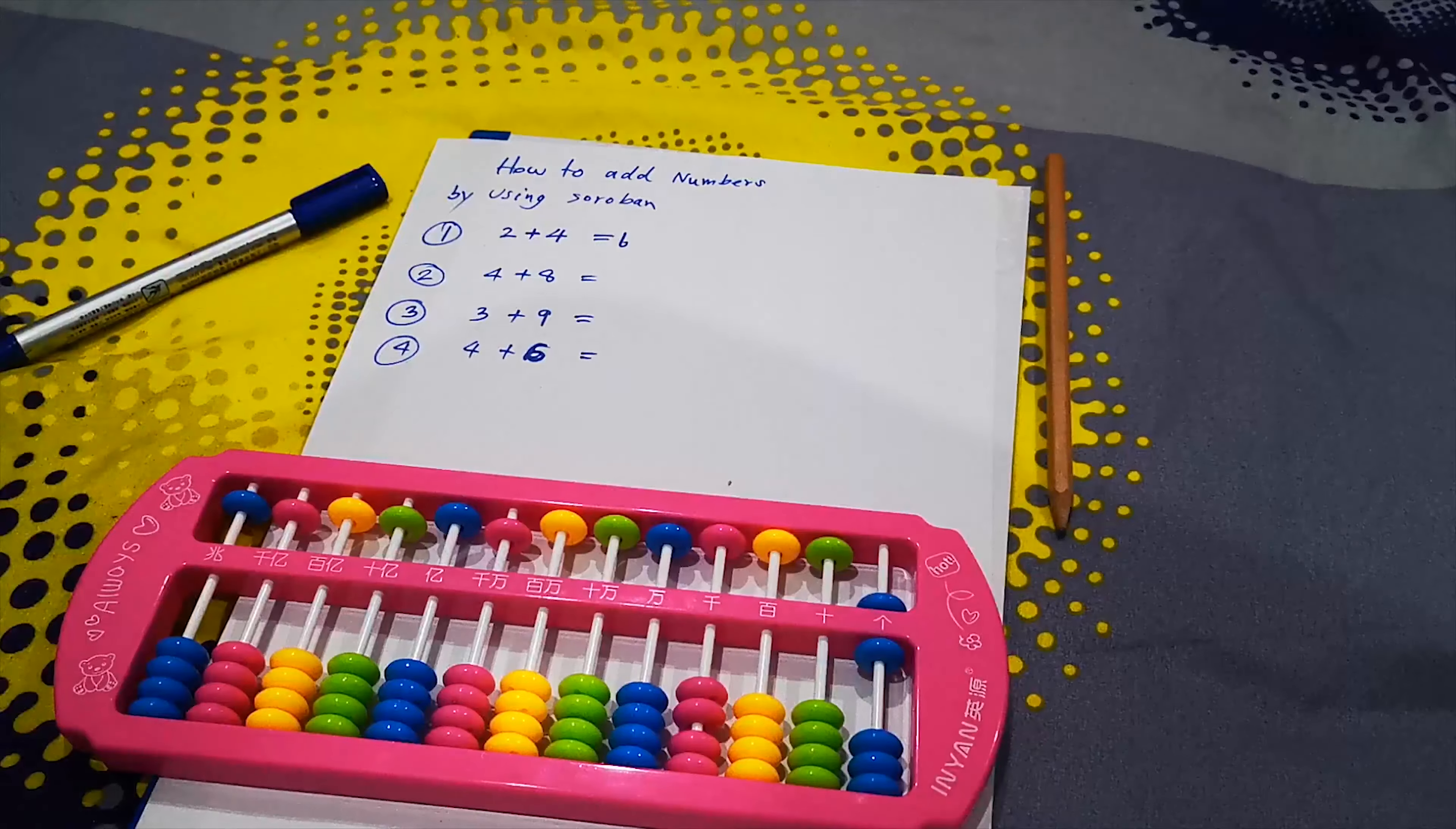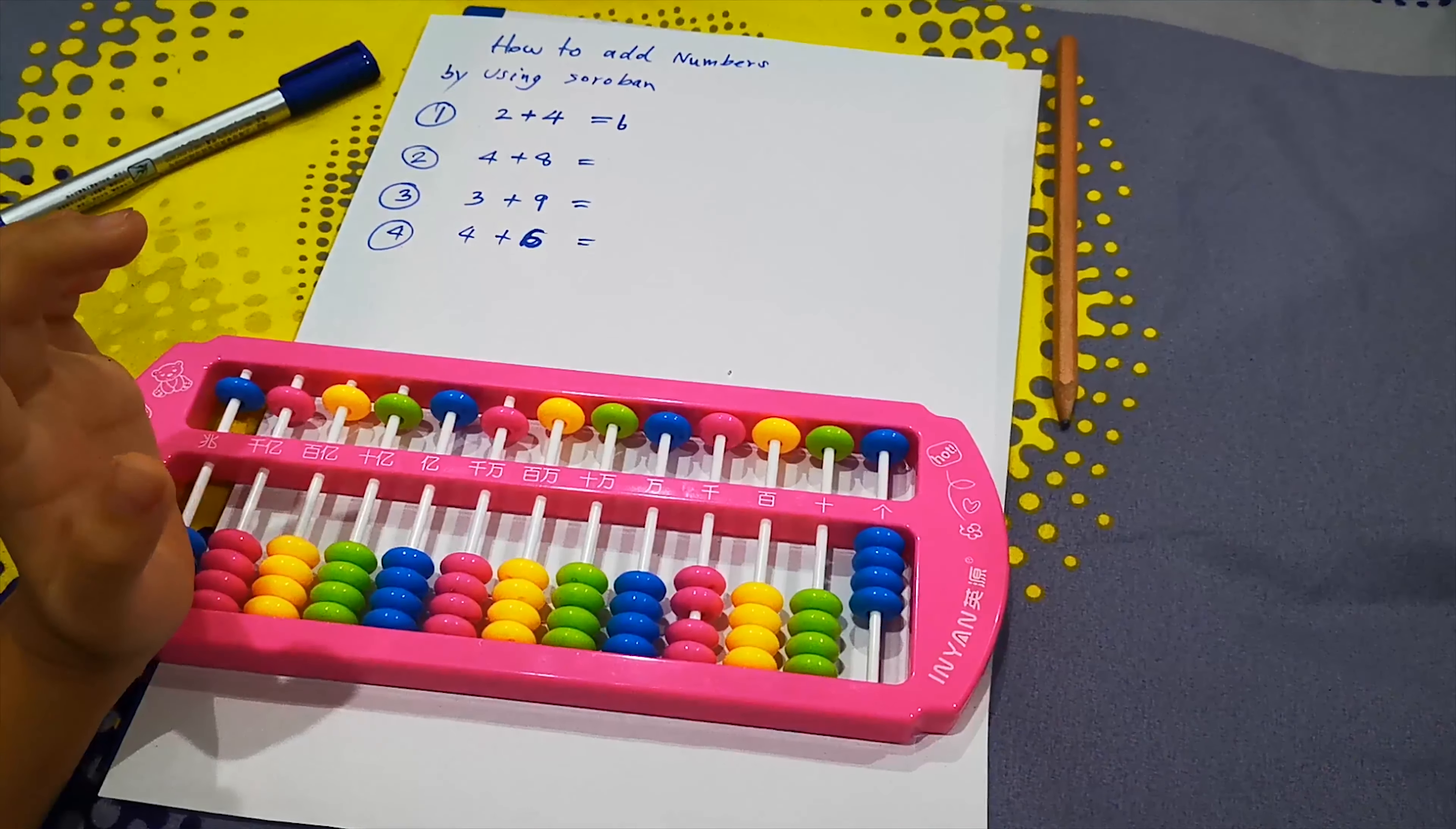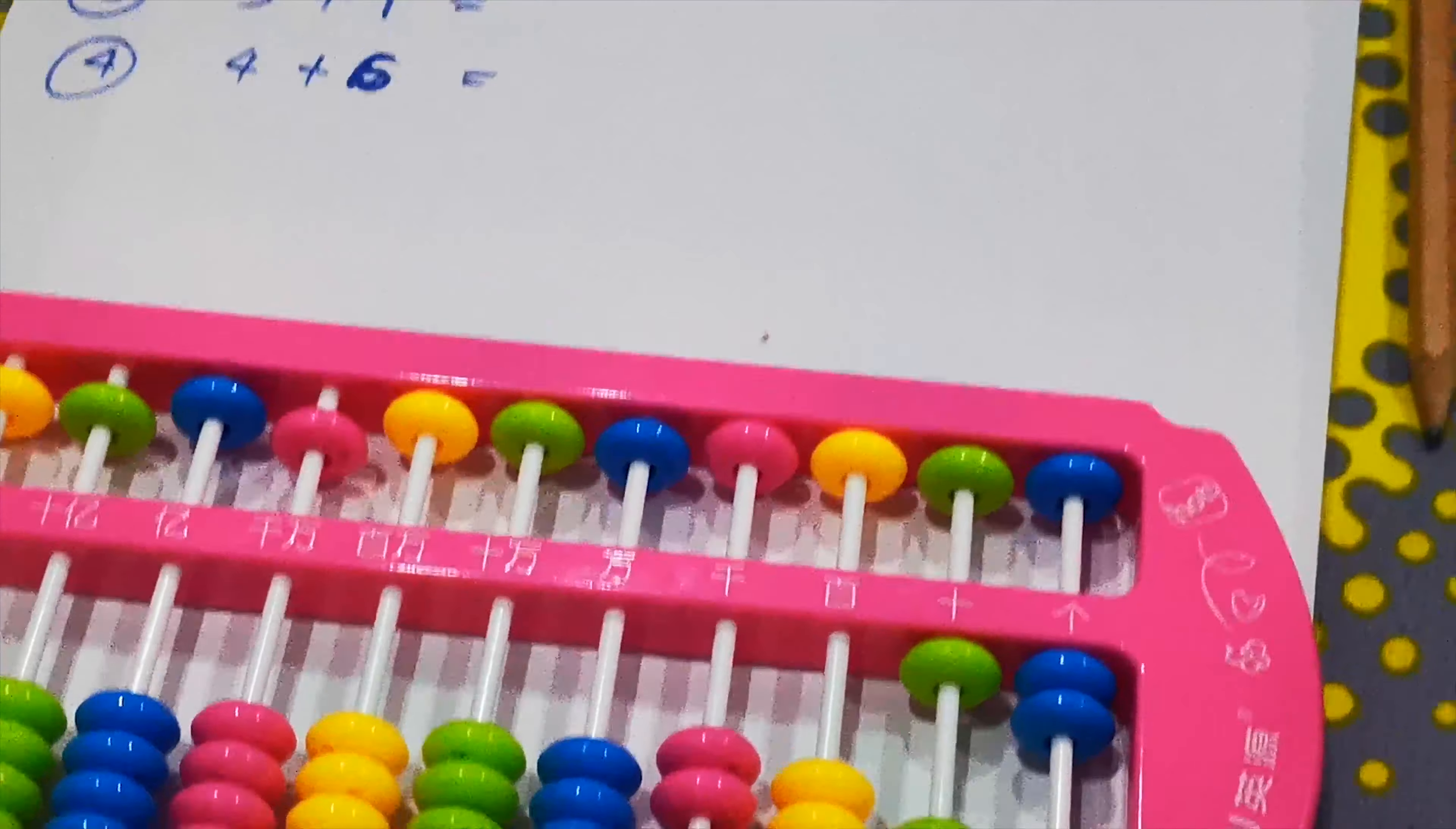Question number 2. 4 plus 8. Add 4 first. Slowly, slowly. And add 10. And subtract 2 equals 12. Put the answer. 12.